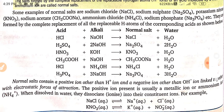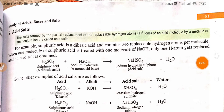Normal salts contain a positive ion other than H⁺ ion and a negative ion other than hydroxide ion, linked together with electrostatic force of attraction. The positive ion present is usually a metallic ion or ammonium ion (NH₄⁺). When dissolved in water, they dissociate into their constituent ions. For example, NaCl when dissolved in water becomes Na⁺ and Cl⁻.